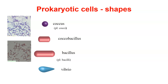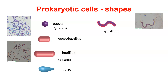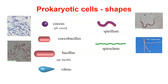We have the vibrio, which is kind of a comma shape — not really regular, it tapers toward one end. We have the spirillum, which is an irregular type shape — kind of a twisty tube — that tends to twist all over the place. We have the spirochete, which is elongated but twisted on an axis, giving it a more rigid look rather than the spirillum which twists all over. And we have pleomorphic, which means the shape varies.